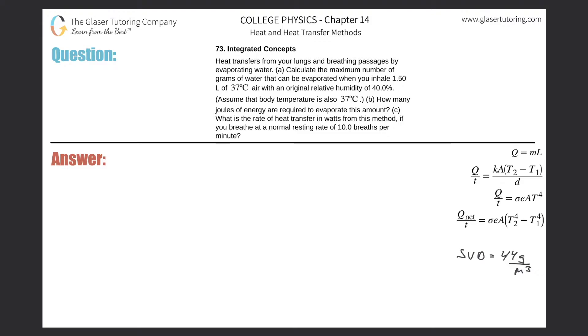Number 73, integrated concepts. Heat transfers from your lungs and breathing passages by evaporating water. Letter A, calculate the maximum number of grams of water that can be evaporated when you inhale 1.5 liters of 37 degrees Celsius air with an original relative humidity of 40%.